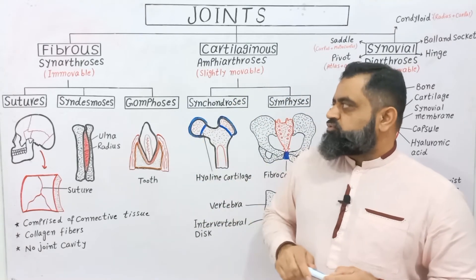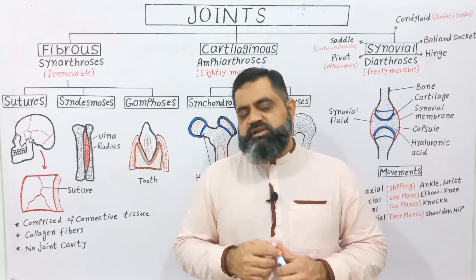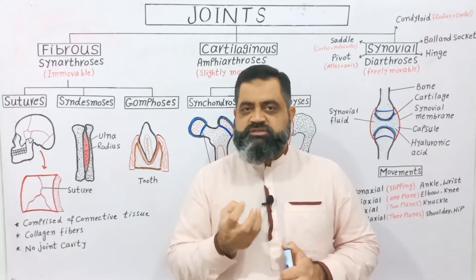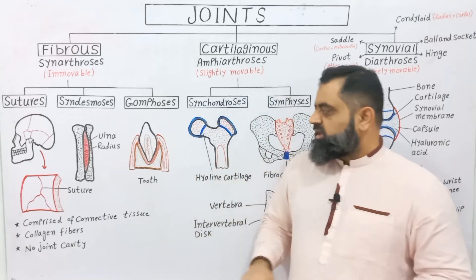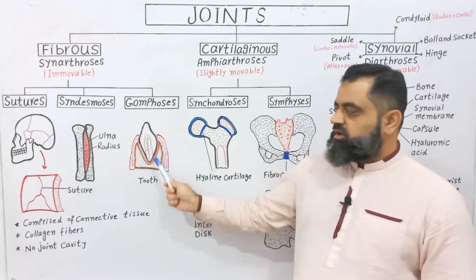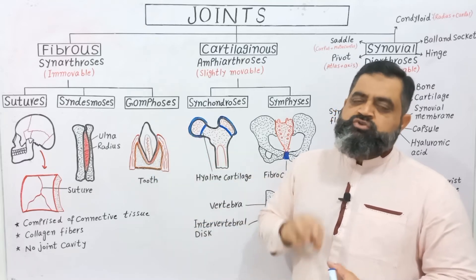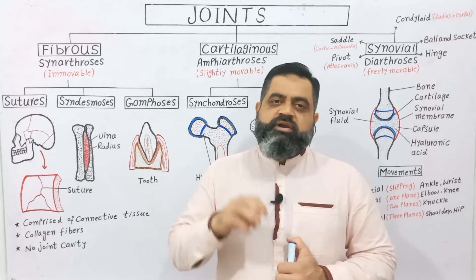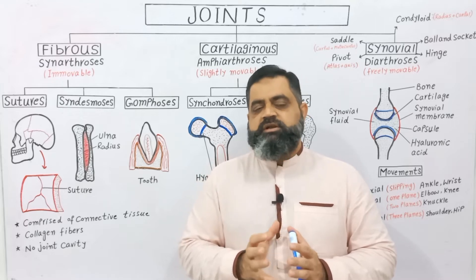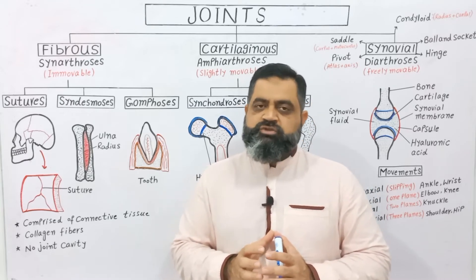The third type of fibrous joints are gomphosis, which are present in our jaws. Our upper jaw is known as the maxilla while the lower jaw is the mandible. Inside the oral cavity, gums contain sockets in which our teeth are embedded. The joint between the teeth and the socket is known as gomphosis. These very strong joints are formed in our mandibles and maxilla, and they function for grinding, chewing, and biting our food.